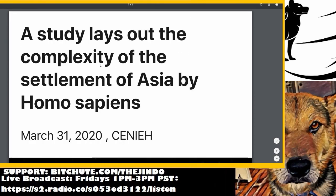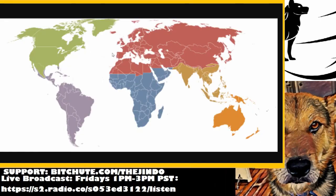Before I go into this, I think it's important to describe what biogeographic realms are, or ecozones. Here's a picture of them — they're basically the broadest division of Earth's land surface, and you can see there's only a handful of them. They're divided based on patterns of terrestrial organisms.